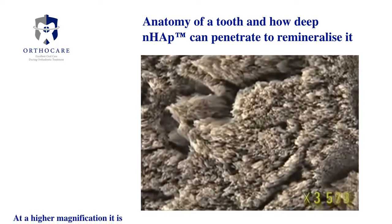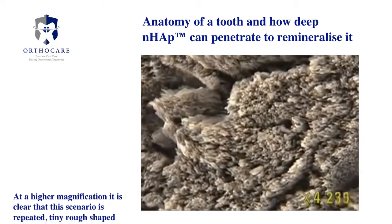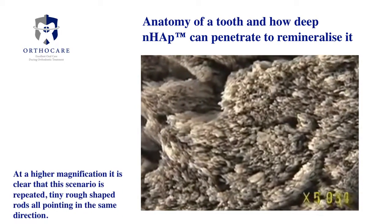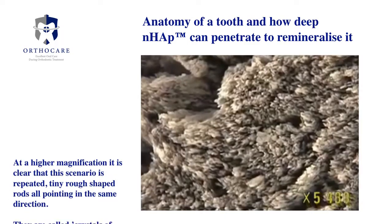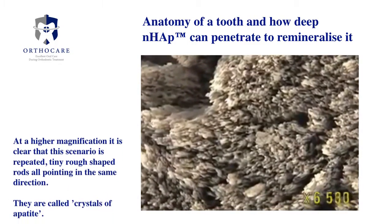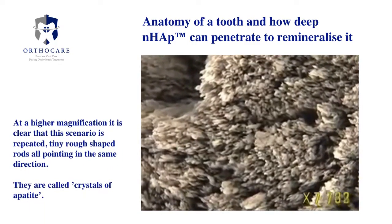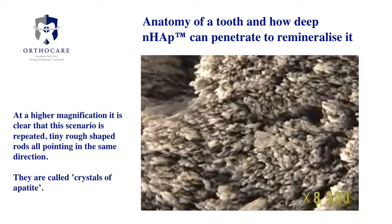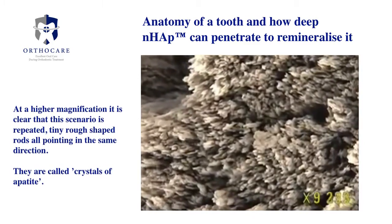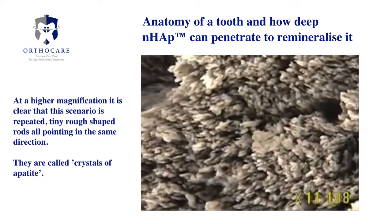At a higher magnification, it's clear that this scenario is repeated. Tiny, rough-shaped rods, all pointing in the same direction. They're called crystals of apatite.